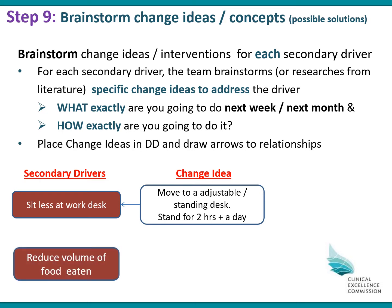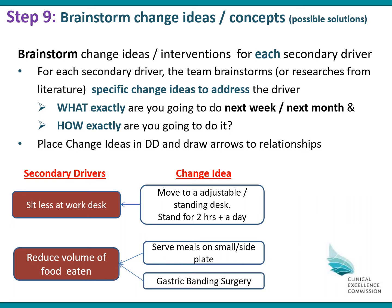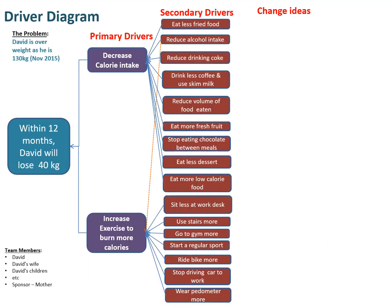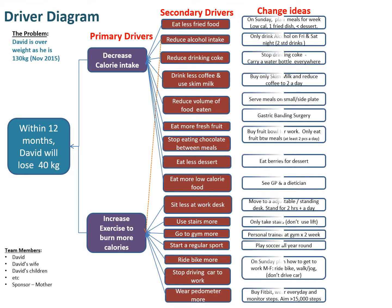Another secondary driver is that he's going to reduce the volume of food eaten. But how is he actually going to do this? He and his team came up with a couple of ideas. First of all, that he's going to serve his meals on a small side plate, which will help to reduce the volume of food eaten. Another concept that the team are thinking about is gastric banding surgery. So you look at each of the secondary drivers and come up with change concepts by looking at the literature, brainstorming with the team, and putting those into the driver diagram, then drawing in the relationship arrows.